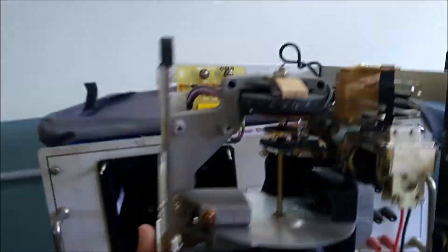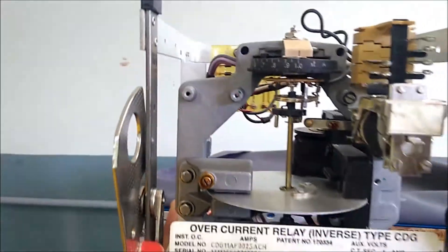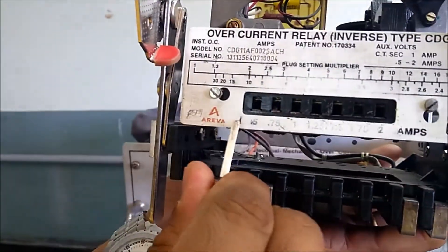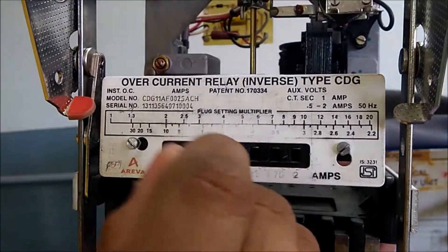And here we see something called plug setting. Plug settings are in the range of 0.5 amps for this particular relay: 0.5, 0.75, 1 amp, 1.25 amps, and up to 2 amps - this relay will work.